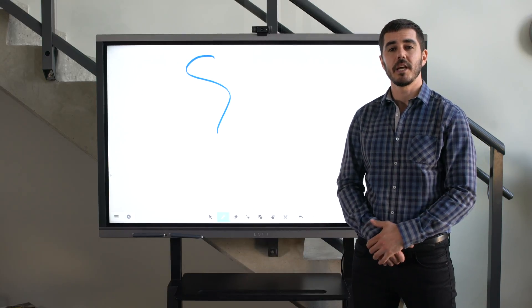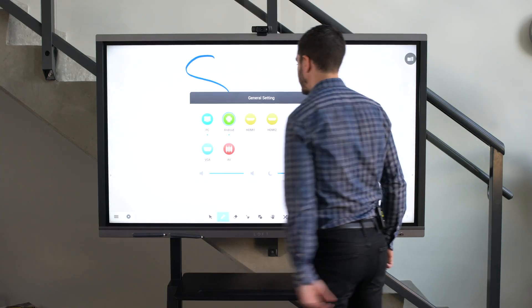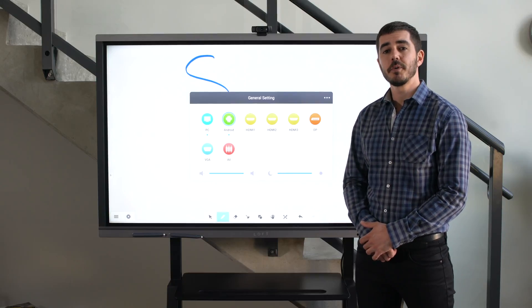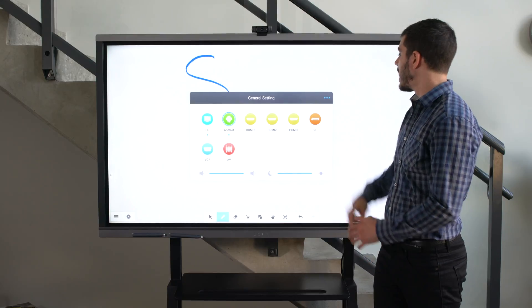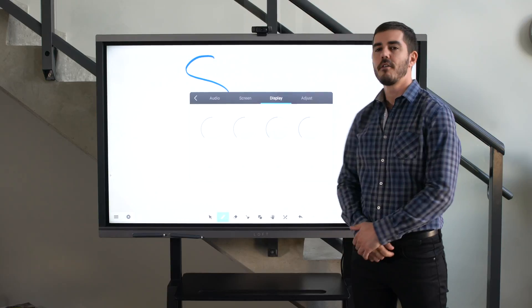If interested in displaying other resources, just swipe up to access the menu. From here, you can switch between different inputs, adjust the audio, or adjust the screen and display for different scenarios.